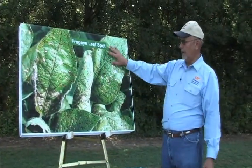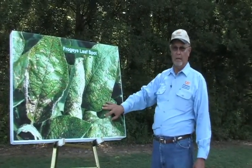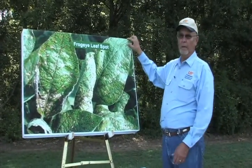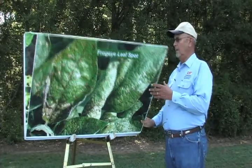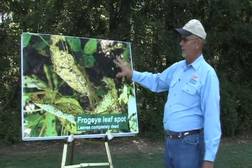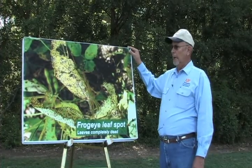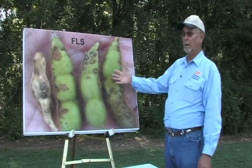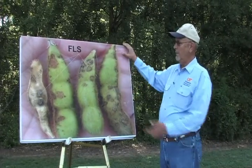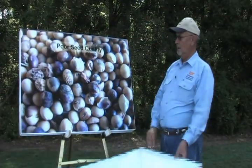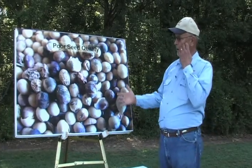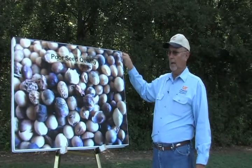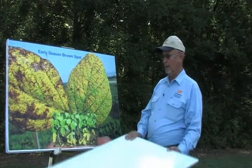Here's a close-up view of frog eye leaf spot in a severe case. We don't want to ever see this in terms of spraying because this is already too late. In just a week or so, you'll see those leaves turn brown and drop off, and yield is reduced significantly. The pods are also infected, along with the seed, and germination of these seeds is very poor. Seed treatments will not help on seed like this.